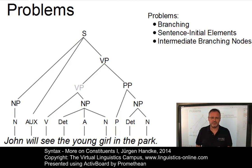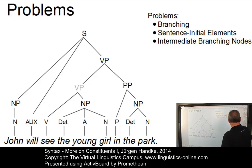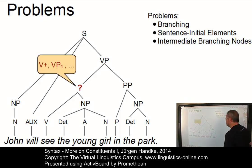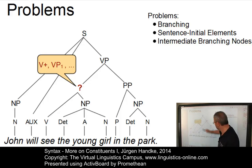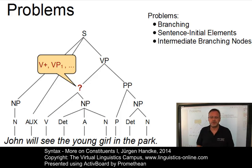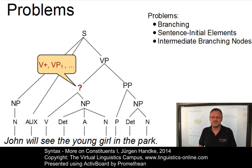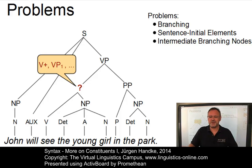One problem we discovered concerned branching. How, for example, shall we label particular branching nodes? For example, what about this one? Shouldn't that be another verb phrase? Or a verb plus? Or a verb extra, verb one, or something similar?